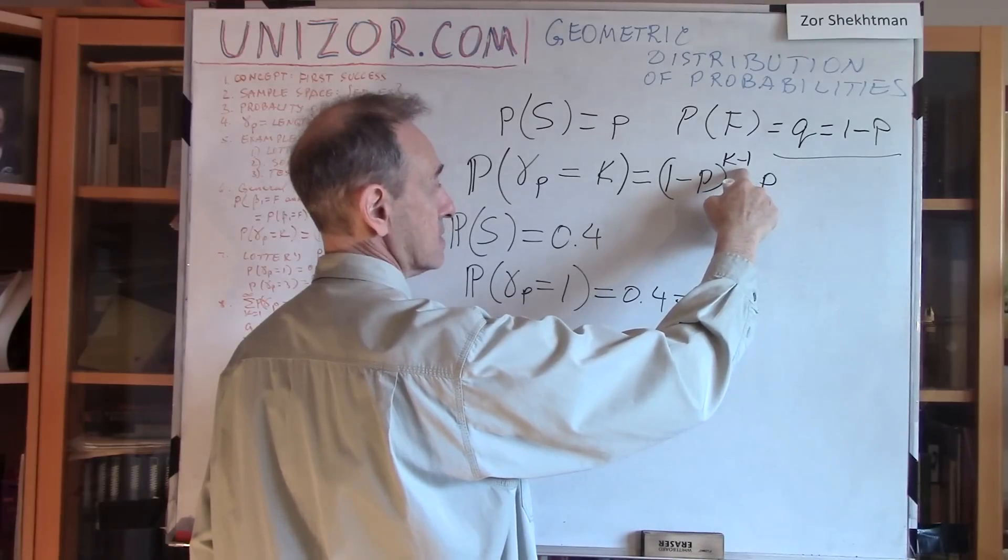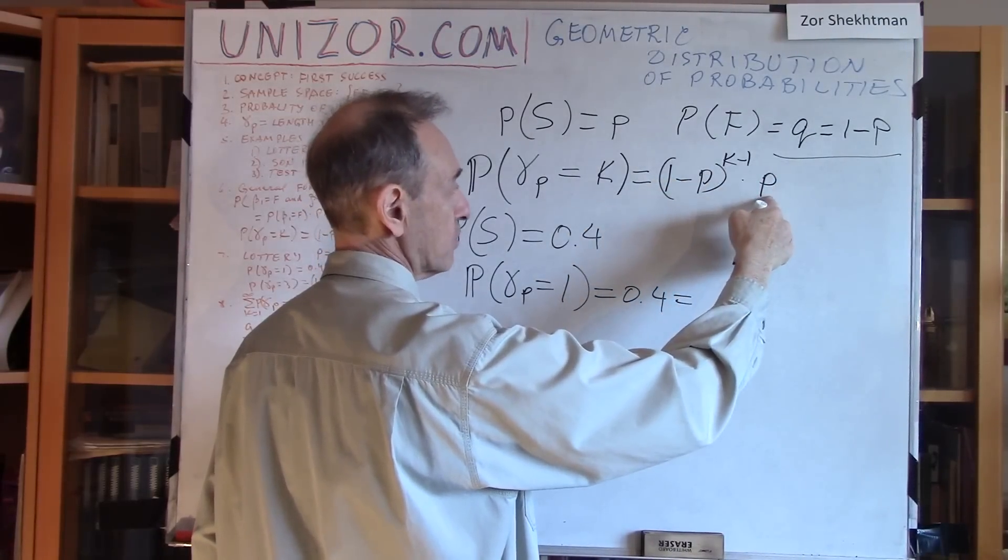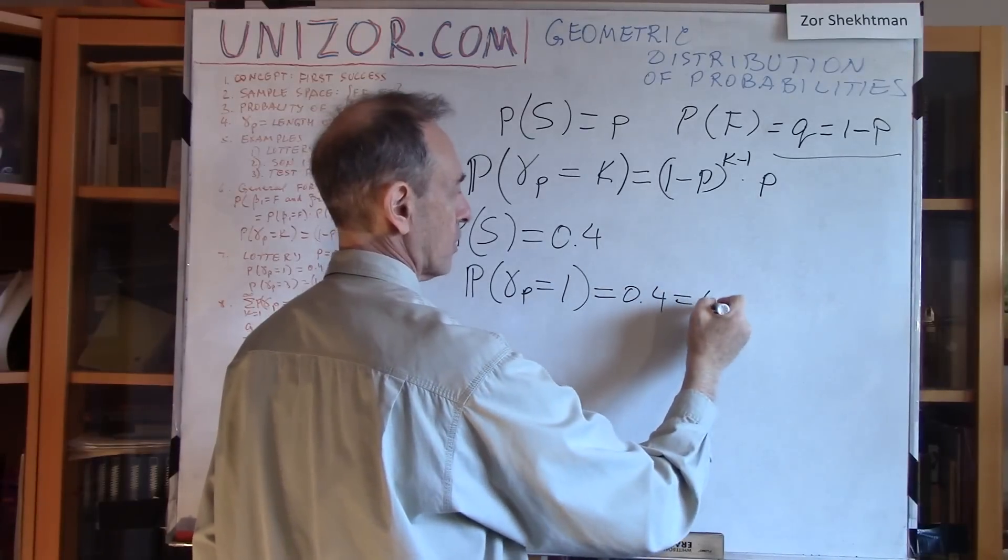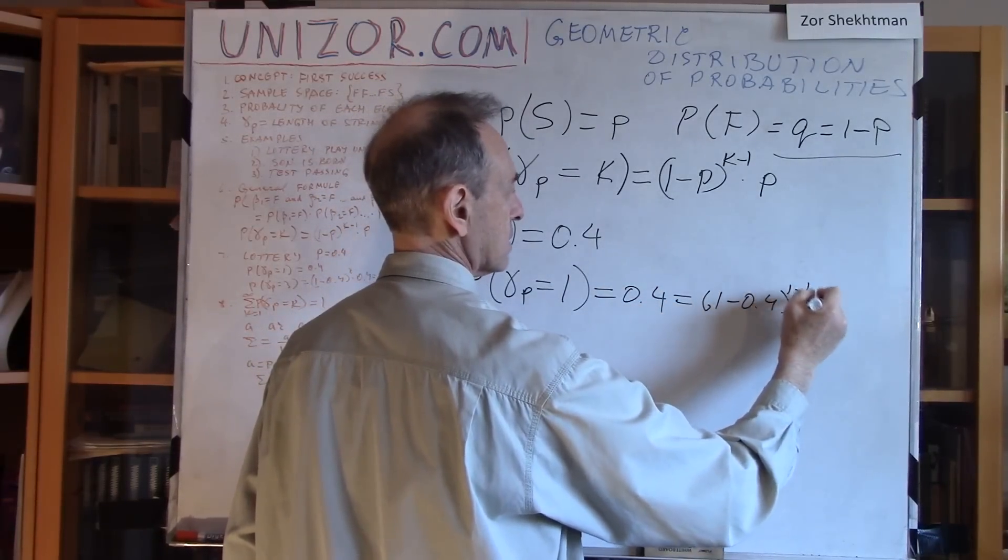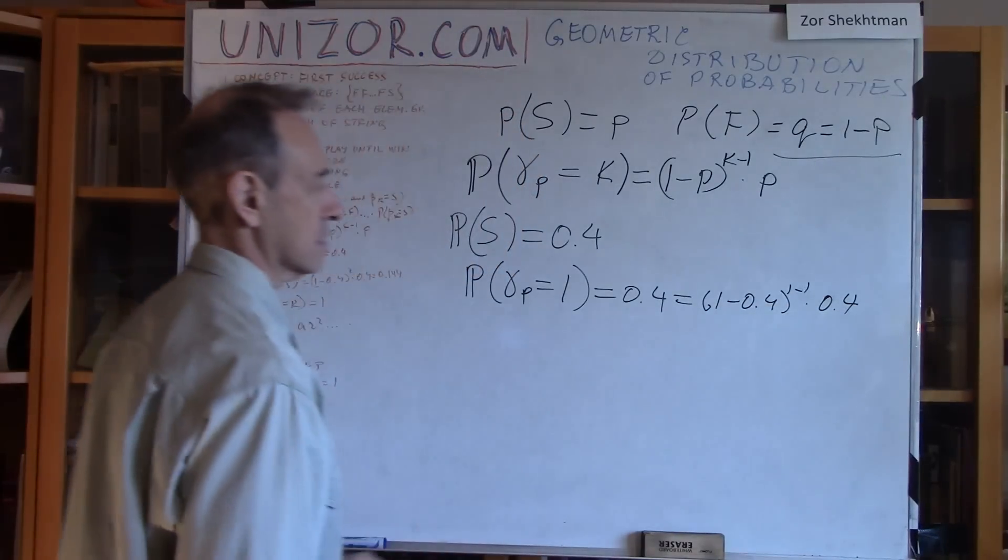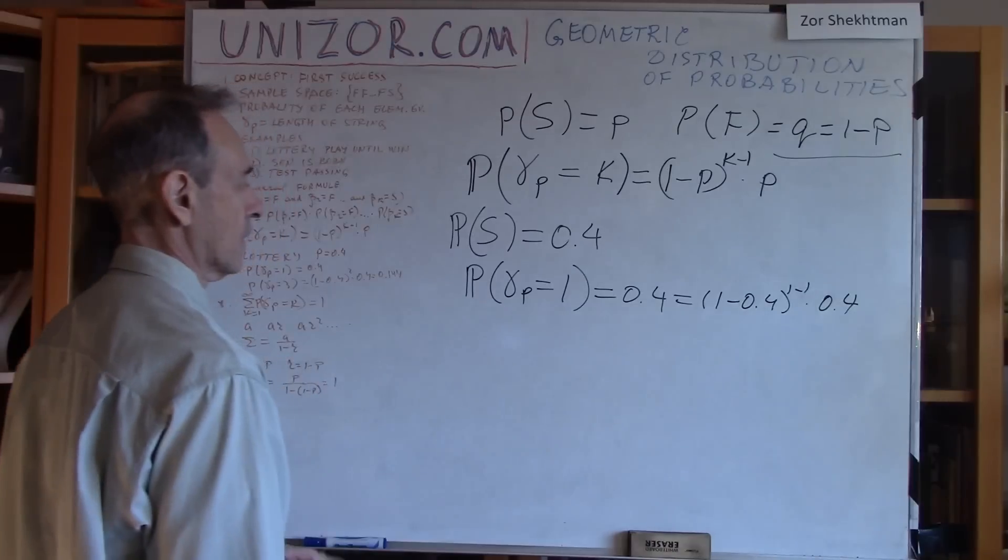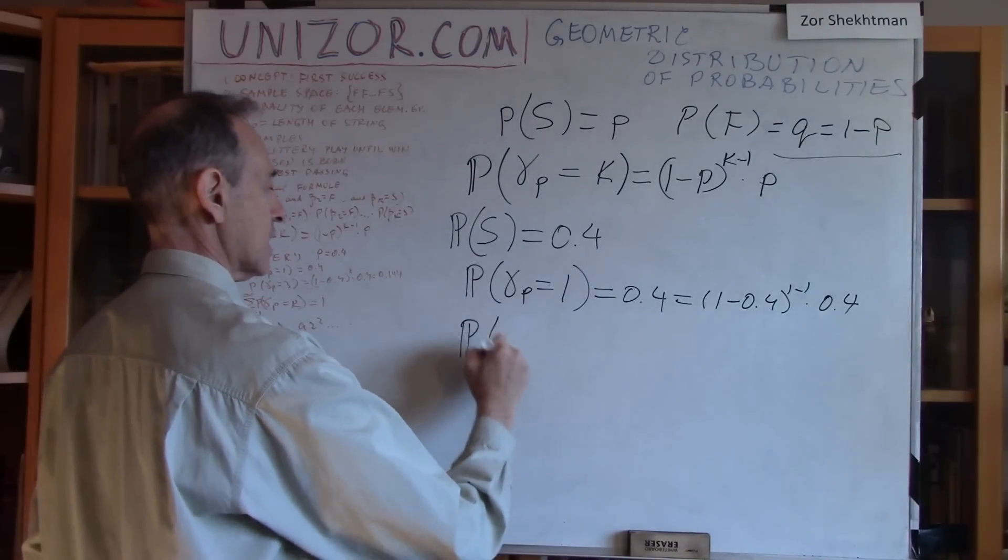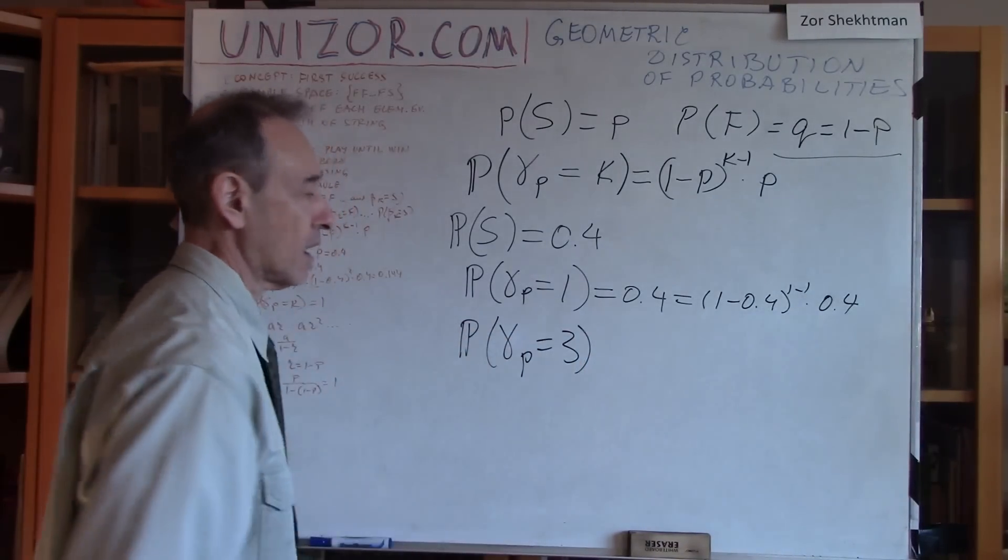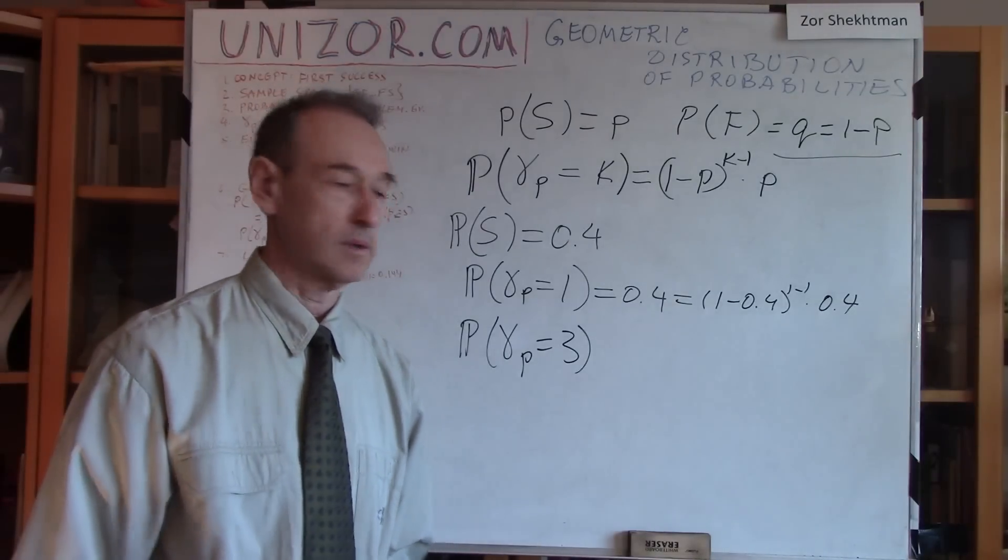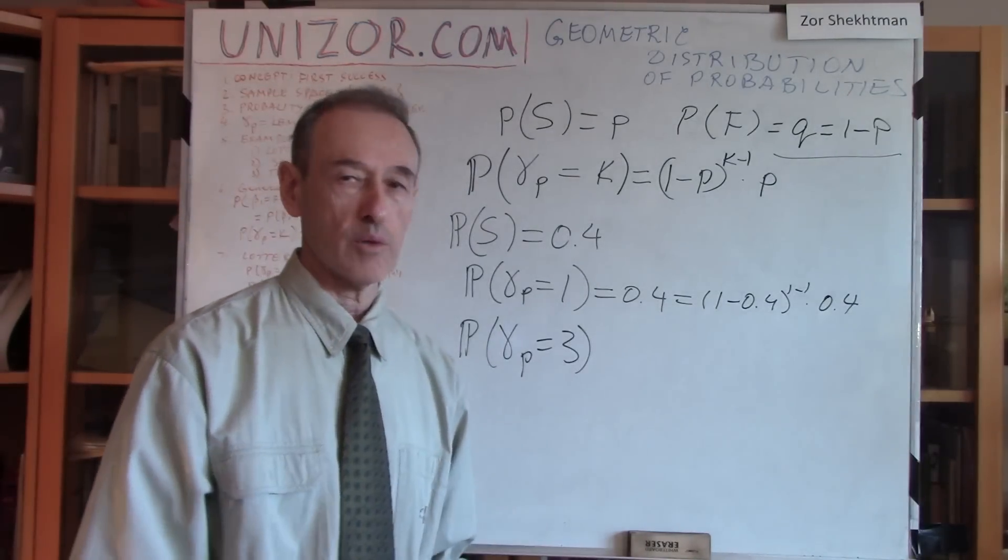K is equal to 1, so K minus 1 is 0. 1 minus P to the power of 0 is 1 times P, which is 0.4. So 1 minus 0.4, 1 minus 1 times 0.4, so that's indeed 0.4, right? Well, out of interest, let's calculate the probability of winning on the third trial. So if we buy one...